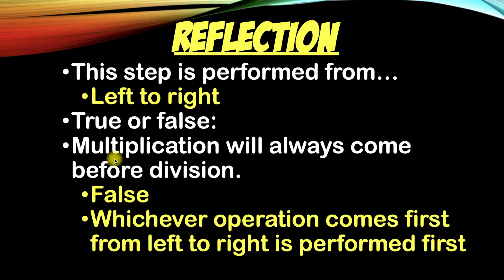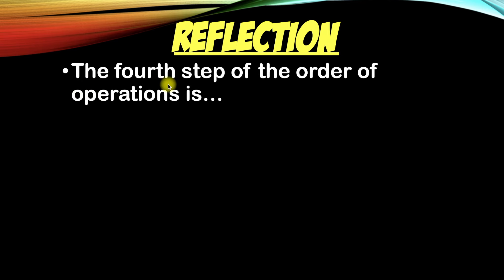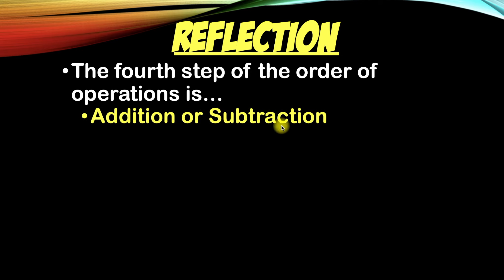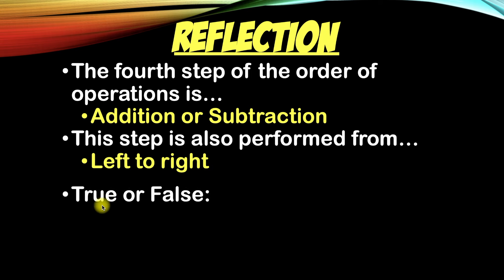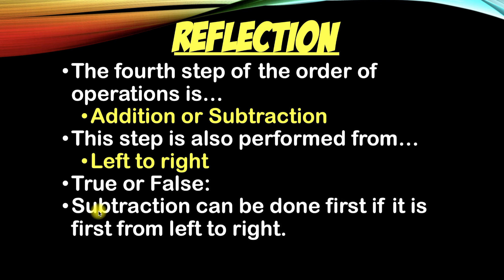If you see multiplication first, you do multiplication first. And if you see division first, you do division first. The fourth step of the order of operations is addition or subtraction, also performed from left to right. True or false: subtraction can be done first if it is first from left to right? That is absolutely true.